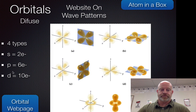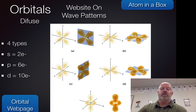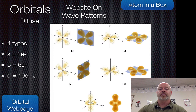The next type is called the D orbital. D stands for diffuse. Within the D orbital, we have four different regions on every orientation. We have this orientation, this orientation, this orientation, this orientation, and then a special one called DZ squared. Because there are five different orientations and each can hold two electrons, we have five times two for ten total electrons in our diffuse orbitals.